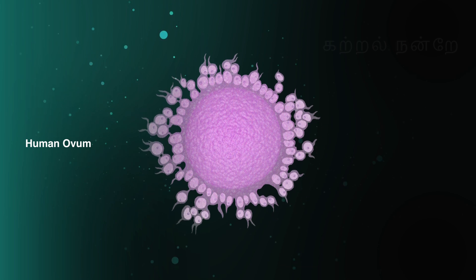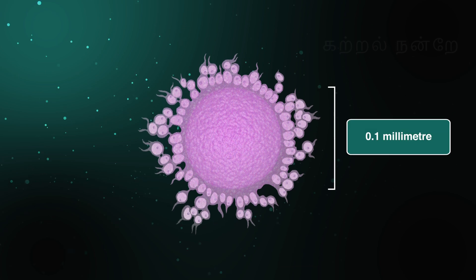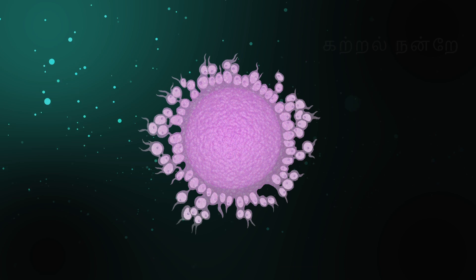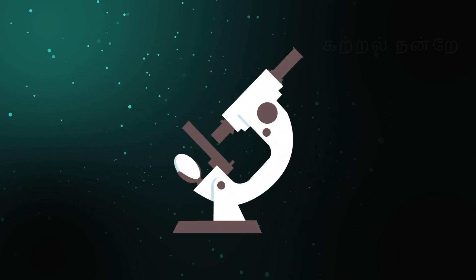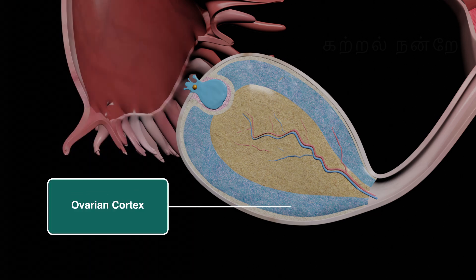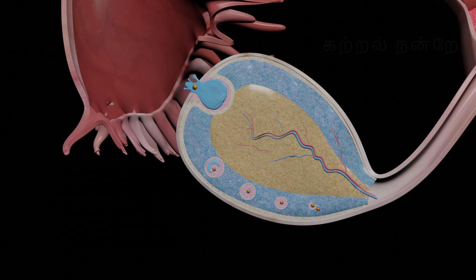The ovum is a unique and special characteristic of femininity. The diameter of the ovum is approximately 0.1 mm. Due to its relatively large size, it is visible to the naked eye without the need for a microscope. During the ovulation cycle of a woman, within the ovarian cortex, of the few primary oocytes that progress to the next stages of development, every month, one ovum matures and reaches the fallopian tube.